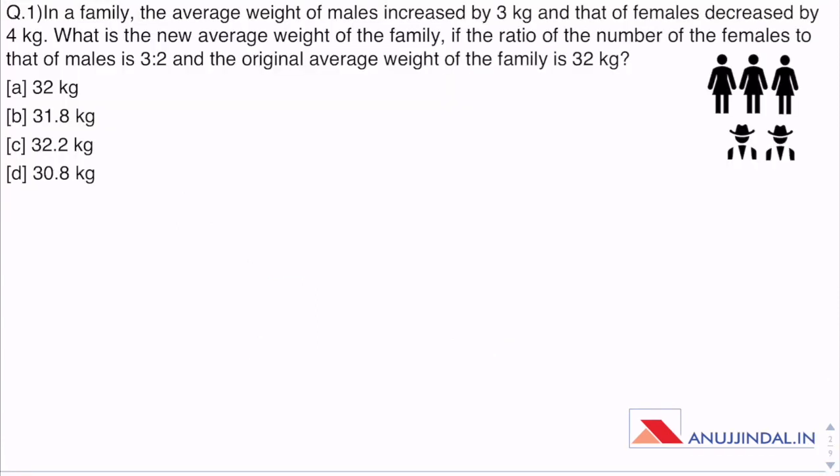Question 1. In a family, the average weight of males increased by 3 kg and that of females decreased by 4 kg. What is the new average weight of the family if the ratio of numbers of females to that of males is 3 to 2 and the original average weight of the family is 32 kg? Seeing this ratio, it is clear that the number of females is more than males, and by seeing this increment of 3 kg and decrement of 4 kg in the weight of females, we know there is going to be an overall decrement in the average weight. Just by knowing this information, options A and C can be eliminated.